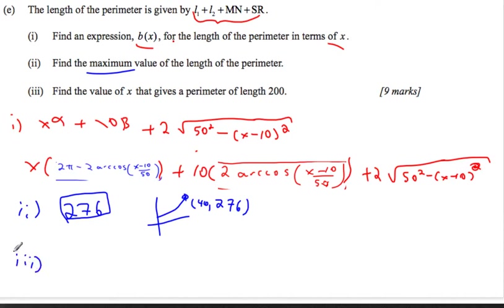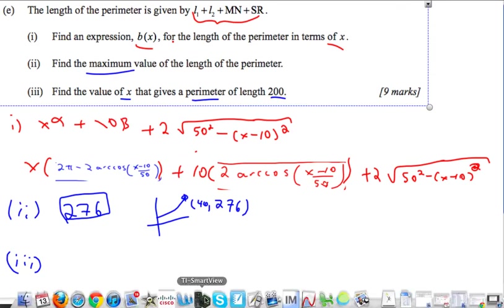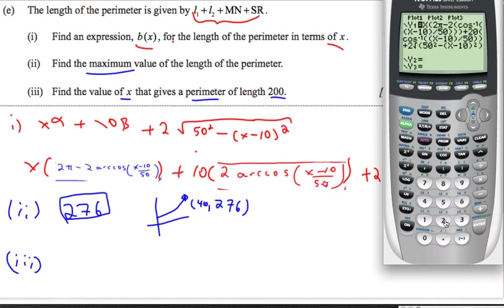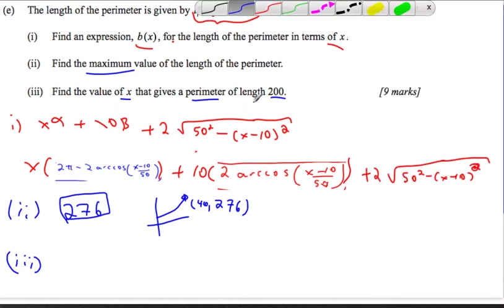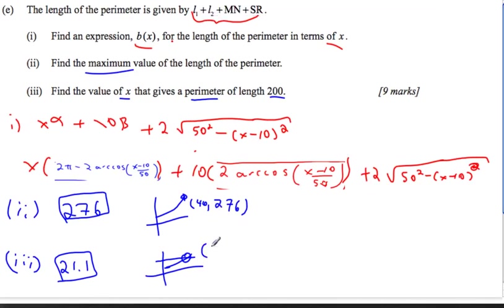In the last part of this problem, we're going to find the value of x that gives a perimeter of 200. This is quite simple. If you're using your calculator effectively, then all we need to do is have a look at where this function meets 200. You also graph 200, and then you simply find the intersection point, and you can see it's at 21.1 to 3 significant figures. And again, just for your method, show this line, show where they meet, and then you could label that point of intersection 21.1, 200, and you could indicate your scale here.